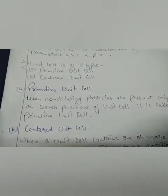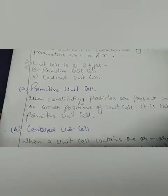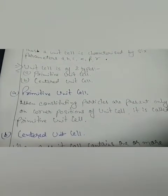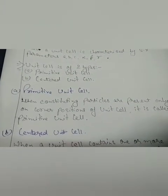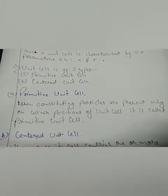Primitive unit cell: When constituting particles are present only on the corner positions of the unit cell, it is called a primitive unit cell.